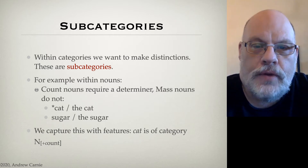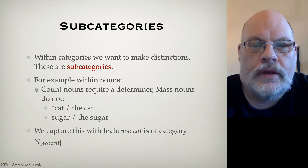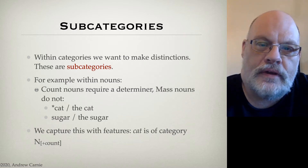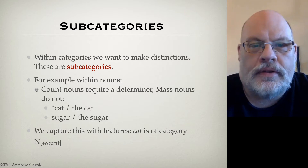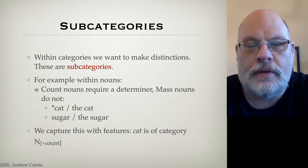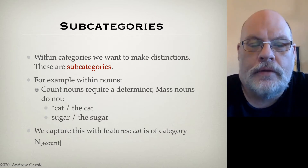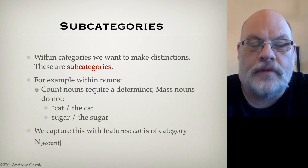How do we capture these subcategories among the larger classes of parts of speech? One way we do this in terms of the mathematics and technology we're going to employ is to mark the category with a particular feature which indicates the subtype we're talking about. For example, if we want to talk about the category of cat, we can talk about the fact that it is a [+count] noun. We indicate this by putting a little subscript feature next to the N category.